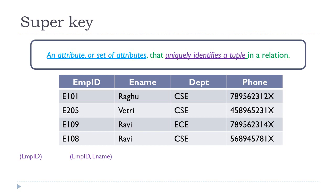For example, employee ID can be a super key because it uniquely identifies every record in this table. Likewise, the combination of employee ID and employee name, employee ID along with department, employee name and department, and employee ID with employee name and department — all form super keys. These are all considered super keys for this table, though this is not the entire list.